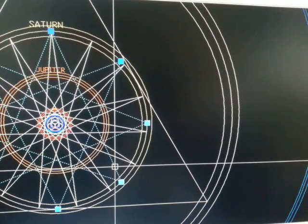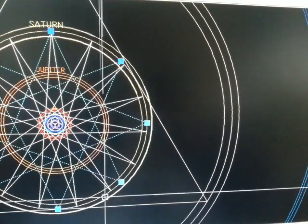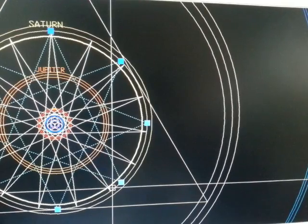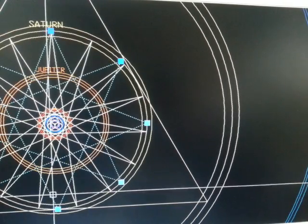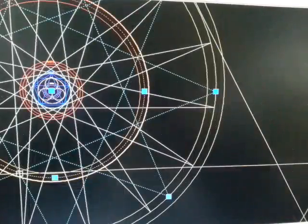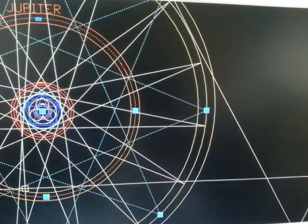Now, this is an eight-pointed star. Here we find Saturn, inside Saturn's mean orbit, the crossing points of the eight-pointed star falls on Jupiter's mean orbit.